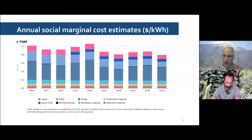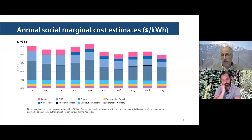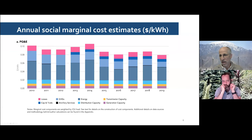Social marginal cost in California has actually been declining over the last few years. That's partially because the grid has been getting cleaner — the greenhouse gas component, both covered through the cap and trade market and uncovered, has been getting smaller over time. And we've been getting cheaper and cheaper renewable energy, so the energy component has been shrinking as well.